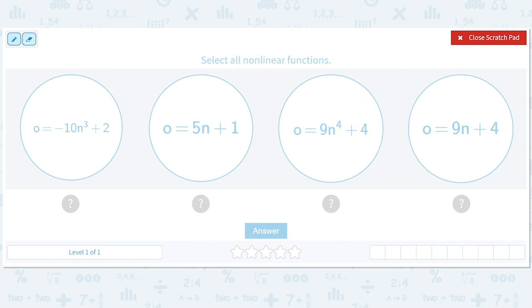So here we just have to be careful and pick all the nonlinear. So that's got a cubed, that's no good. That's got a fourth, that's no good. Everything else looks like o equals mn plus b or just y equals mx plus b. So these are the nonlinear ones.